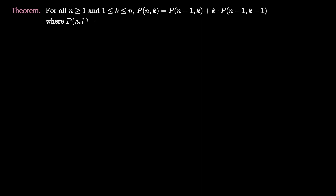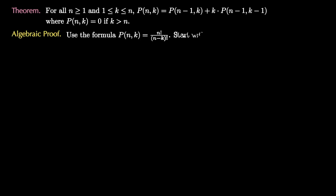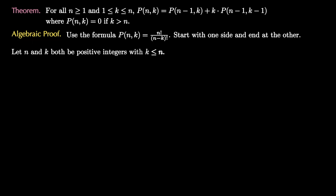Let's investigate two techniques of proof — algebraic proof and combinatorial proof — to verify the identity we just uncovered. The identity is: for all n greater than 1 and 1 ≤ k, P(n,k) equals P(n-1,k) plus k times P(n-1,k-1), where P(n,k) is 0 whenever k is greater than n. The first technique is algebraic proof, using the formula for P(n,k), which is n! over (n-k)!. We'll start with one side and end at the other.